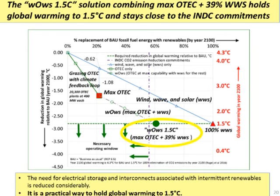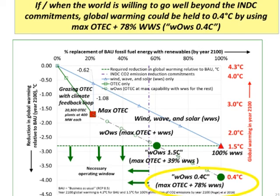There's no reason to stop at 1.5°C. If we continue down the WOWS line and add 78 percent wind, wave, and solar to 22 percent from OTEC, we can end up at 0.4°C global warming - better than where we are now.